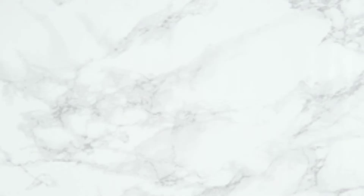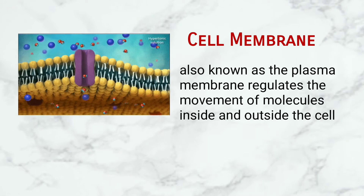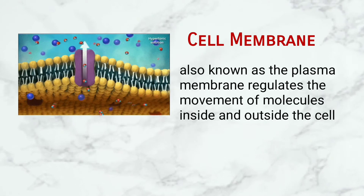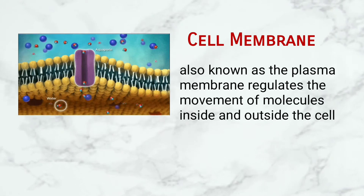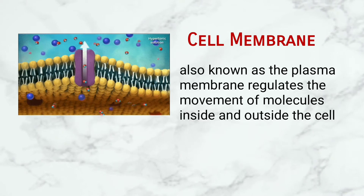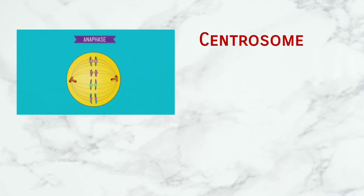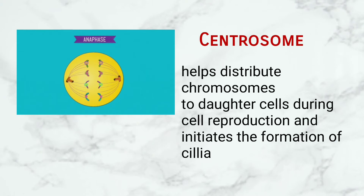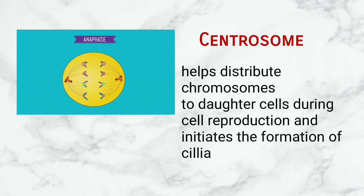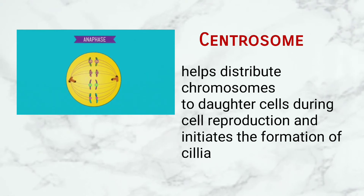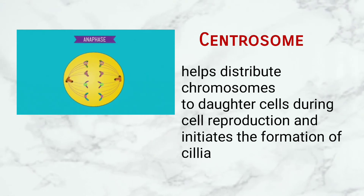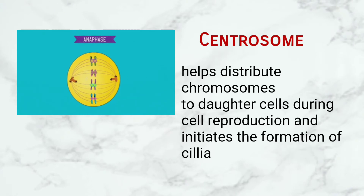Cell Membrane: The cell membrane, also known as the plasma membrane, regulates the movement of molecules inside and outside the cell. Centrosome: The centrosome helps distribute chromosomes to daughter cells during cell reproduction and initiates the formation of cilia.